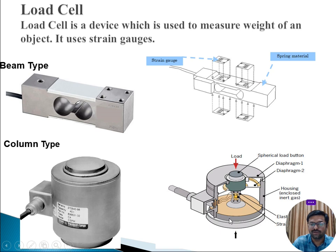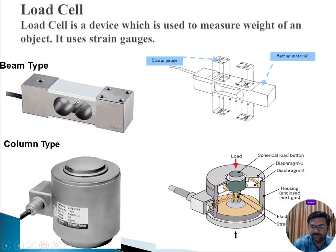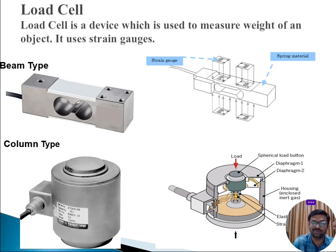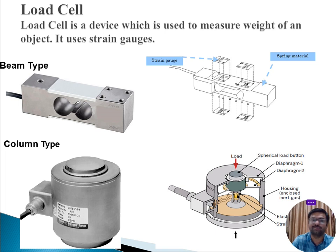Coming to the column type load cell — this is a cross-sectional diagram. You can observe a spherical load button where we apply our load to measure the weight of an object. There are two different diaphragms with a hollow tube between them, and the entire load cell is covered by a housing filled with an air gap. The strain gauge is placed inside, and the applied force first acts on the elastic body before reaching the strain gauge, causing compression and expansion that changes the resistance.